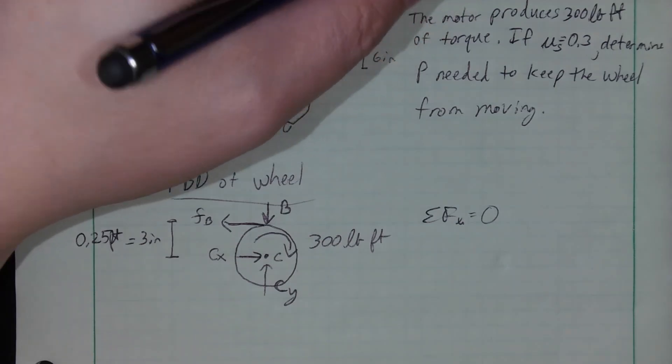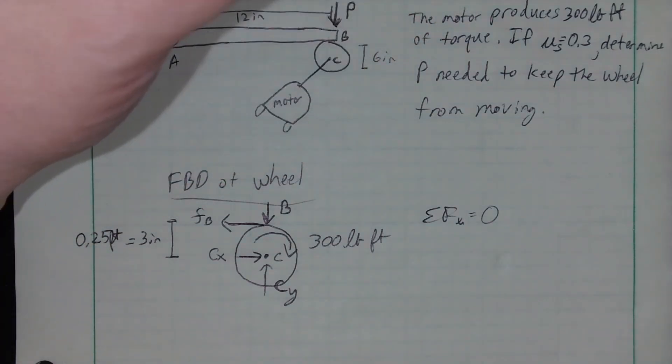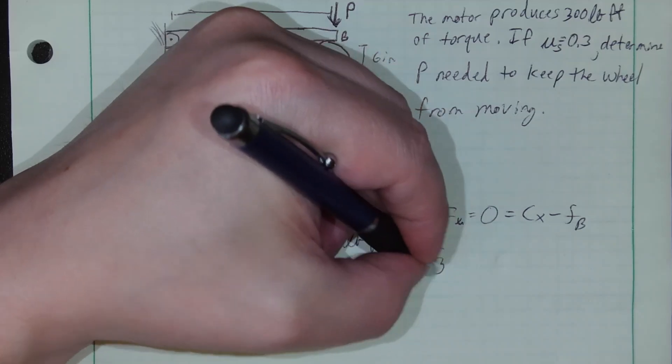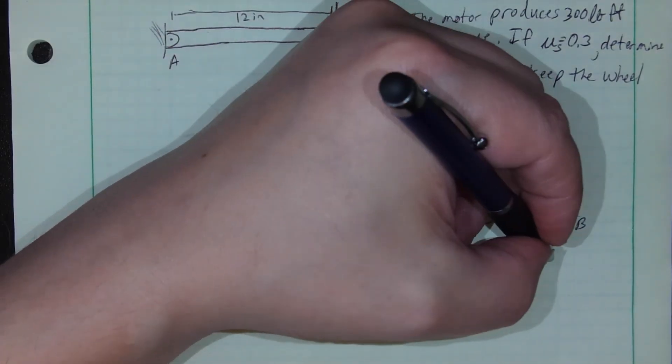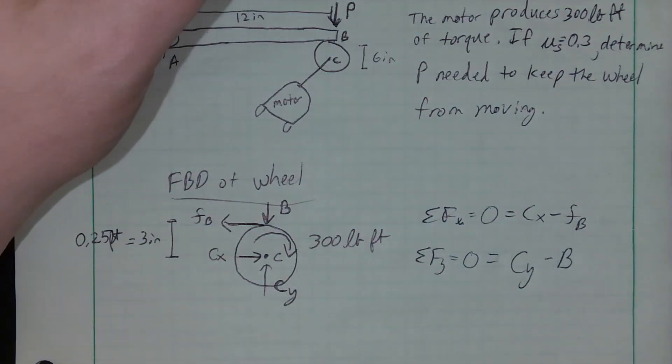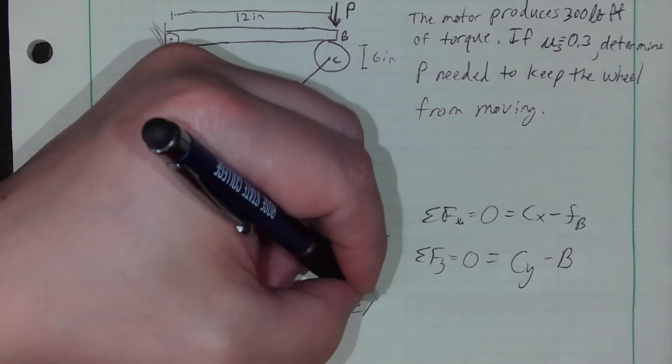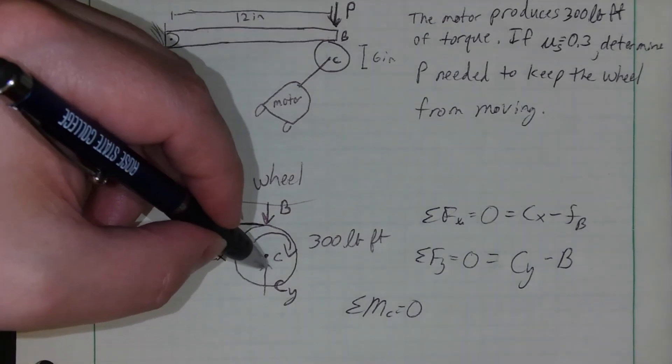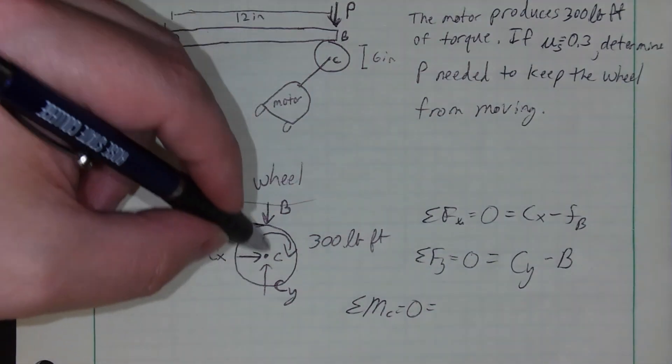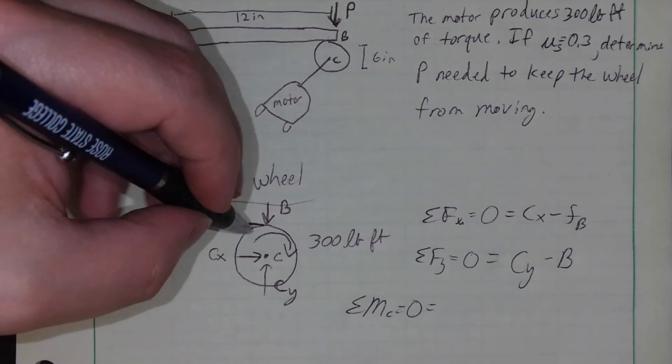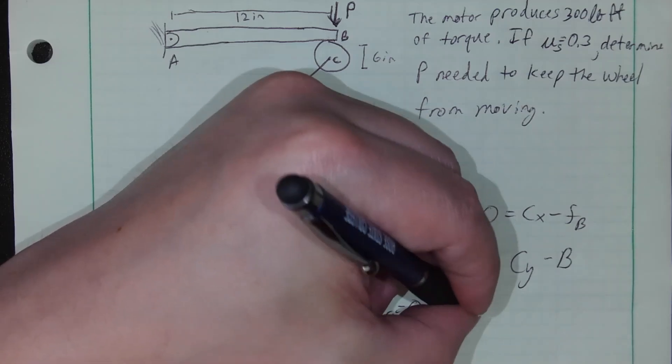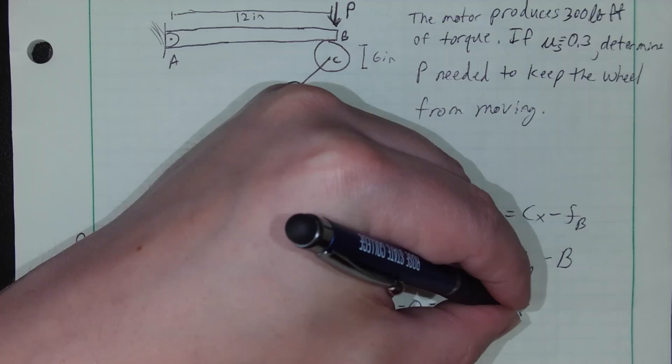I'm going to work through it though. If you want to work through it on your own, mute me and work through this and then come back and see how we did. But I'm going to work through it here. Sum of forces equals zero: CX minus friction at B. Sum of forces in the Y direction equal to zero: I've got CY minus that normal force B. And then sum of moments, we're just going to take about point C. Let's see, I've got CX and CY all pass through point C, so no moments caused there. B also passes through point C, no moment caused there.